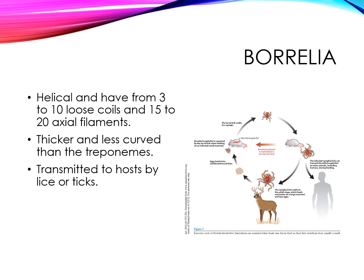Borrelia are helical in shape with three to ten loose coils and 15 to 20 axial filaments, and are thicker and less curved than the treponemes. Species include B. recurrentis, B. hermsii, and B. burgdorferi. Borrelia are transmitted via lice and ticks. B. hermsii is the cause of endemic relapsing fever, while B. burgdorferi causes Lyme disease. Collectively, they are referred to as the Borrelioses.